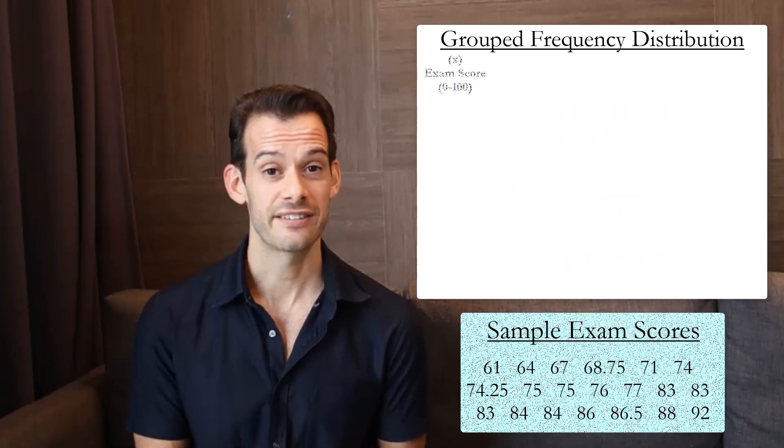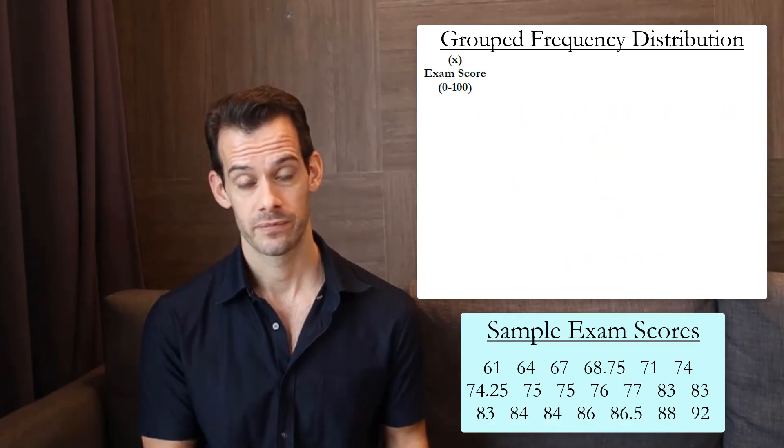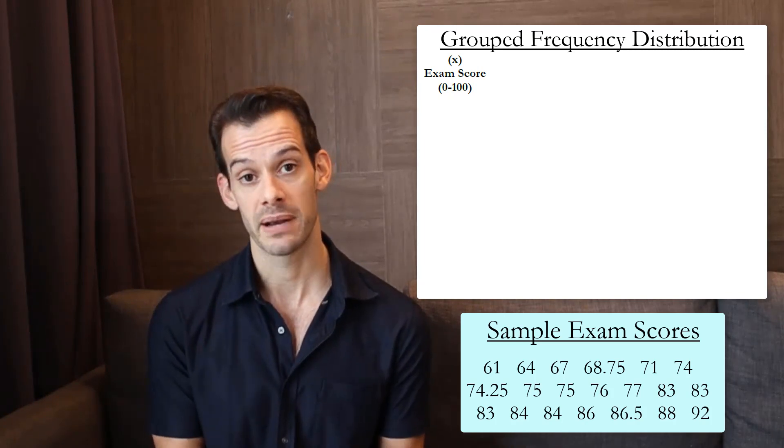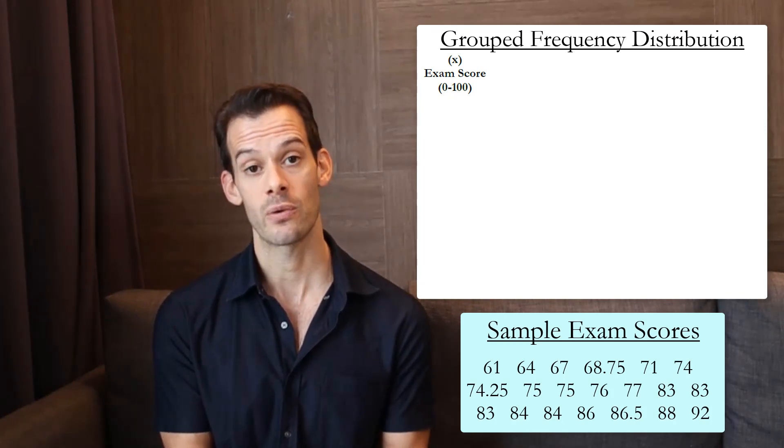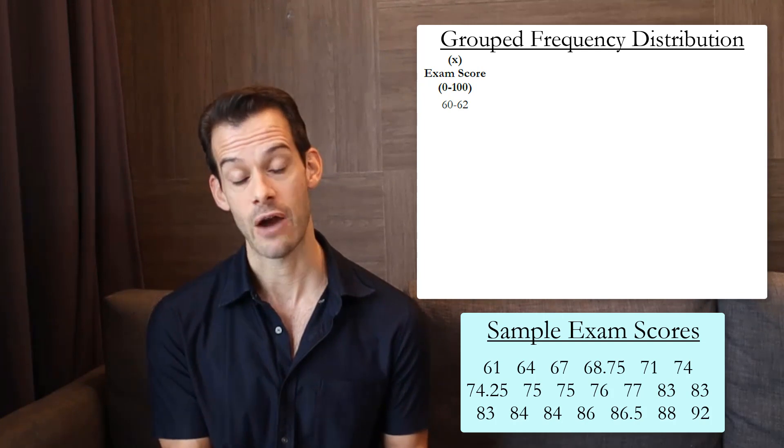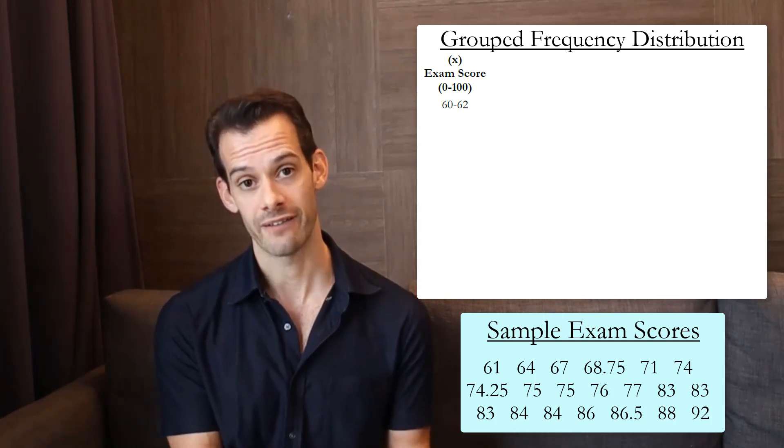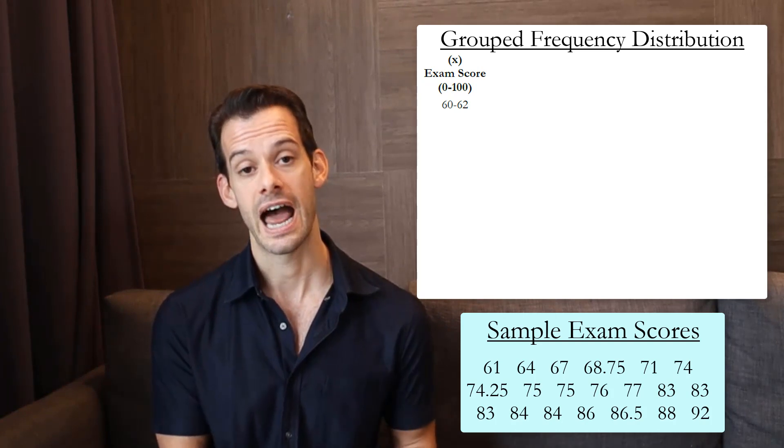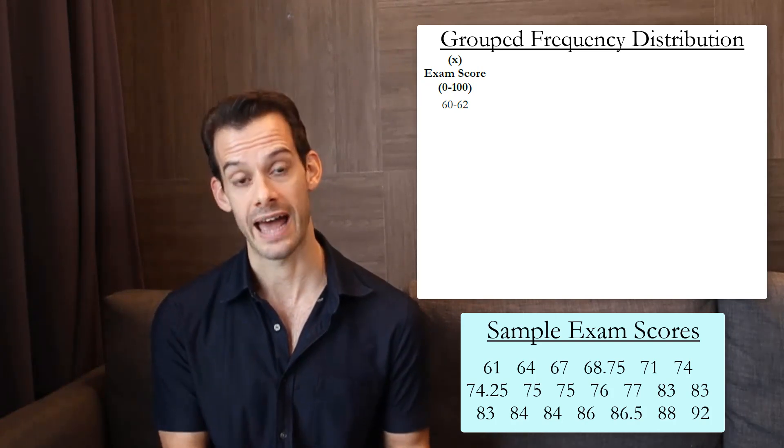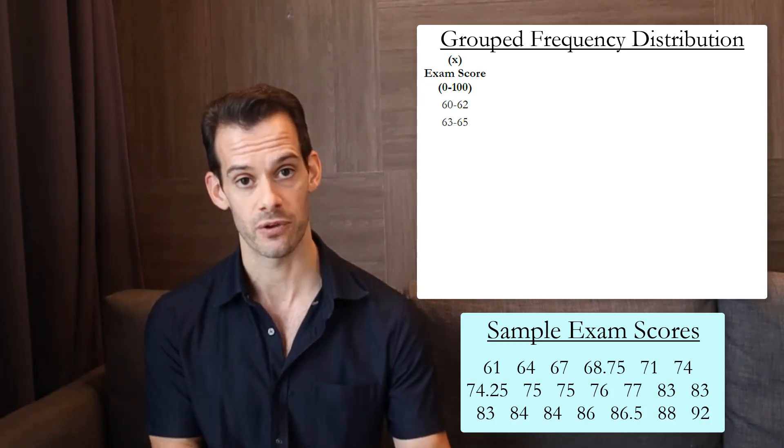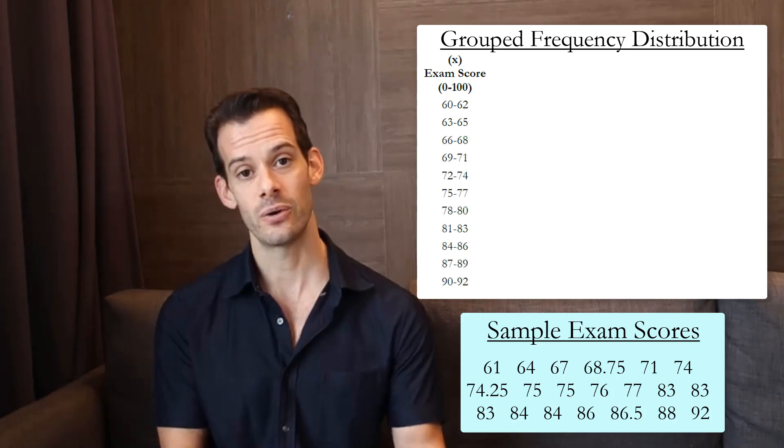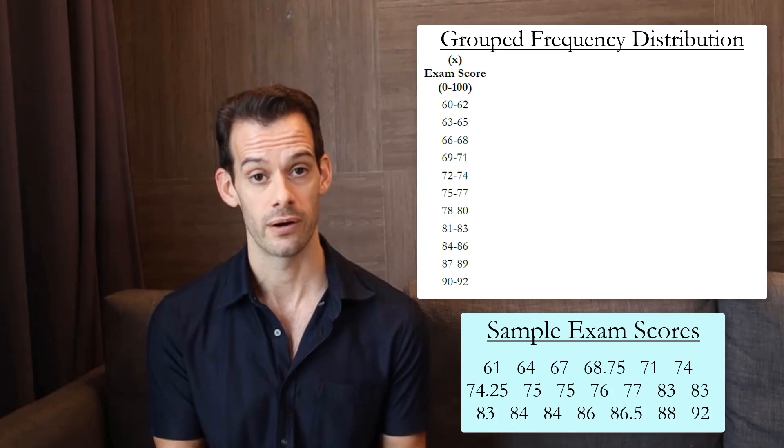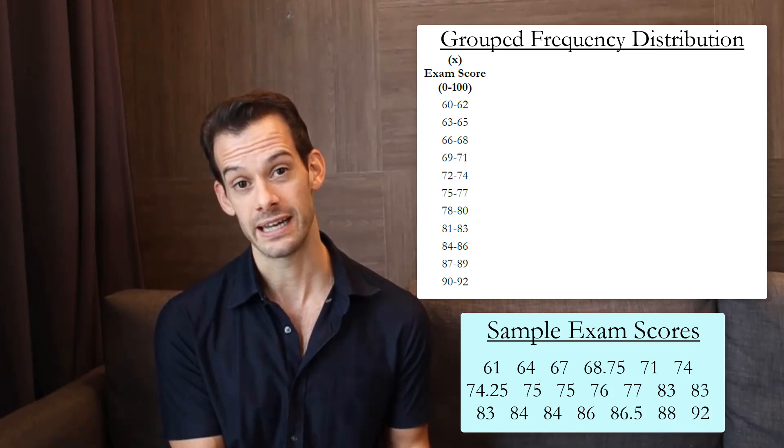So let's try using a class interval of 3 with our data. Our lowest score is 61, but we don't necessarily want to start with 61 because it's not a multiple of 3. We want to start with the nearest multiple of 3, and so that would be 60. And then we're going to have three scores there, so that's going to be 60, 61, 62. And then our next class interval will start at 63, which is also a multiple of 3. And so we continue in this fashion until we get to the class interval that includes our highest score, which would be the one from 90 to 92.